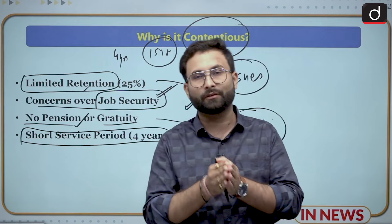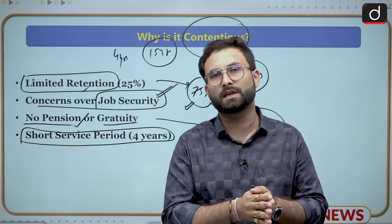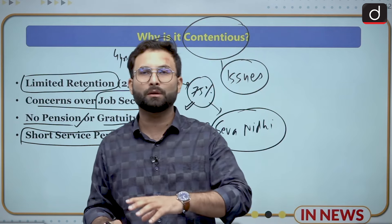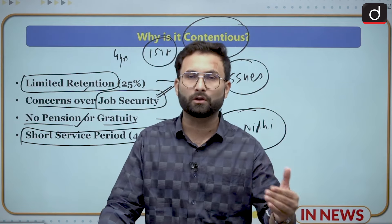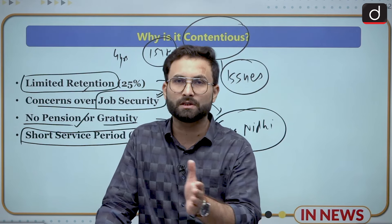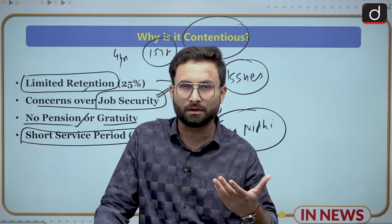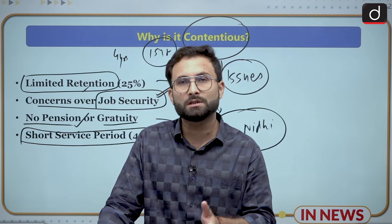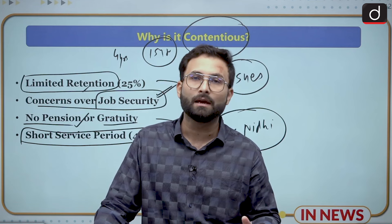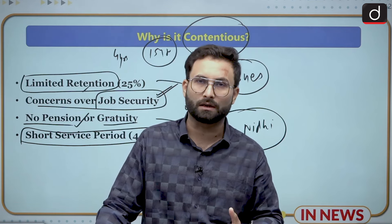Nearly 75% of Agniveers will be joining civil society after 4 years and may not find proper opportunities. Even regular graduates finishing degrees struggle to find jobs — these people have stayed out of mainstream society for 4 years and are now expected to find civilian employment. That is a significant concern attached to the short service period.